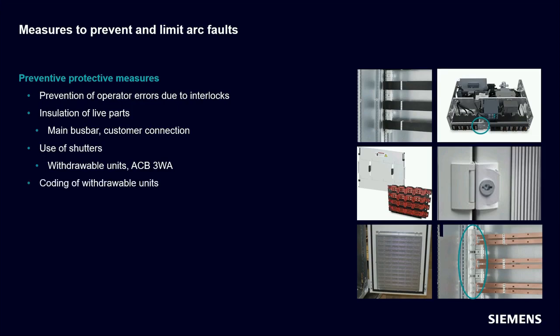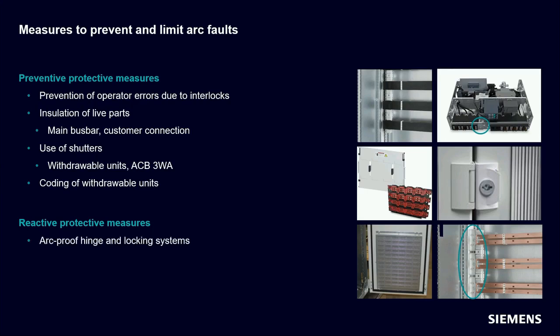Other measures include insulation of the main bus bar and customer connections, the right selection of internal separation, and the use of shutters at the distribution bus bars, adapter plates, or on the circuit breaker. These can prevent live parts from being accidentally touched with a tool during maintenance work. Further measures include the use of coding to avoid confusion between withdrawable units of different ratings. Reactive measures include the arc-resistant hinge and locking system, protective measures at front ventilation openings, pressure relief flaps, roof plates, and arc barriers that prevent the arc from moving from one cubicle to the next.